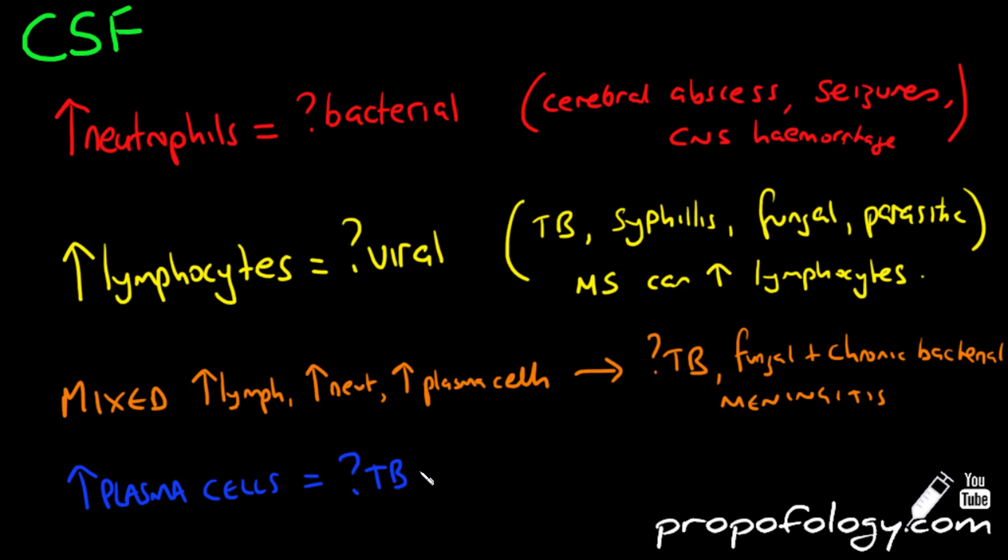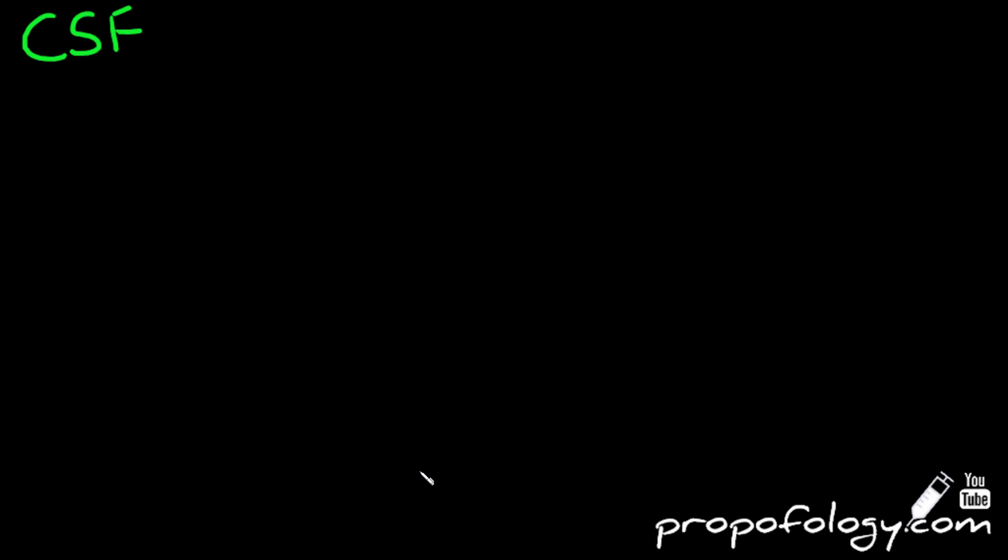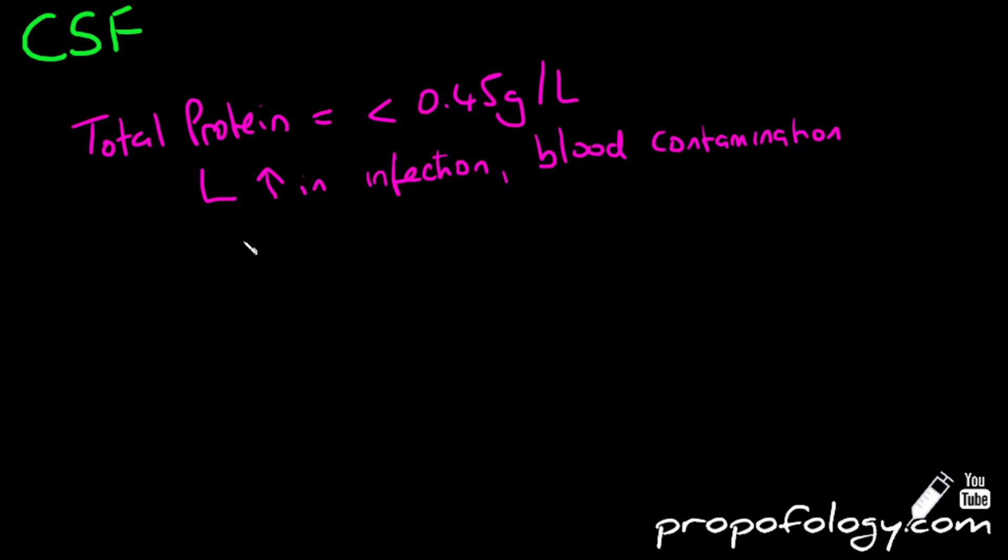Sometimes you go to great lengths to collect a sample of CSF, so it's important to know why. The biochemical analysis of CSF can be diagnostic in certain conditions. If you've got an increase in CSF total protein, increased levels can be found in infection, blood contamination, and chronic inflammatory disorders of the central nervous system such as TB, syphilis, and Guillain-Barré.